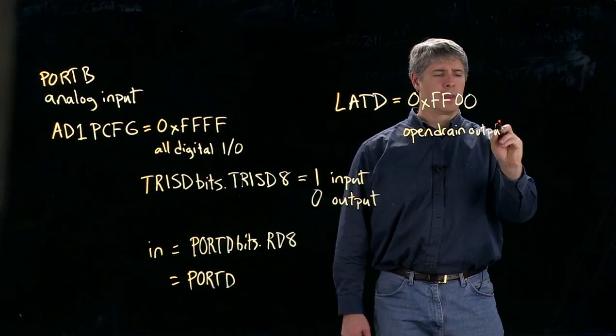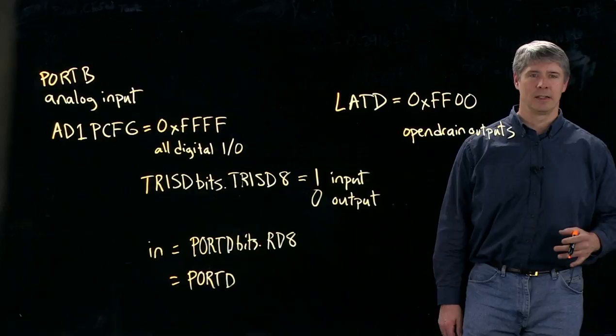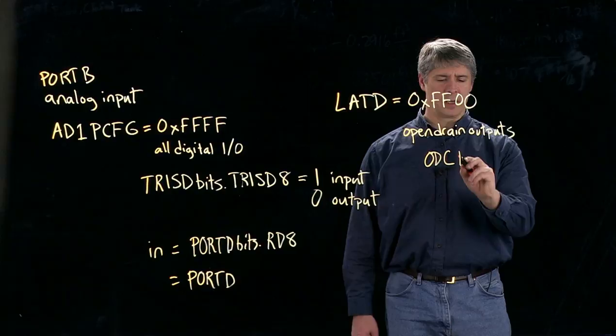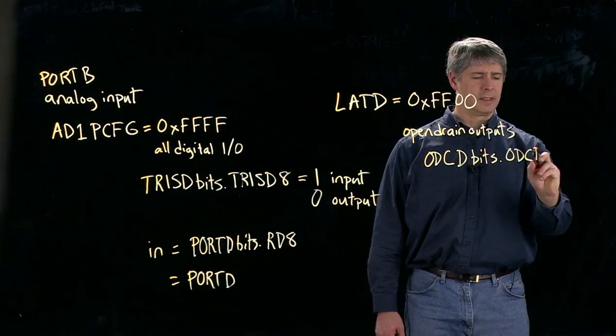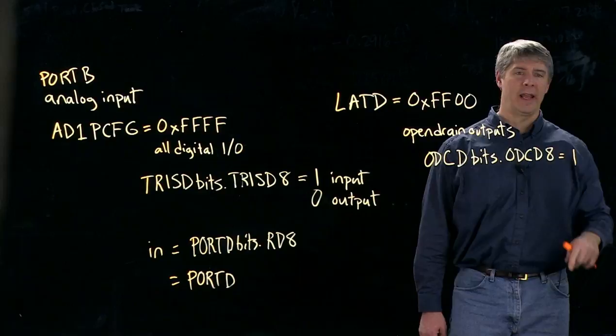And the way we do that, if we want to configure, say, pin 8 of port D as open drain, we would say ODC PORTD bits dot ODCD8 is equal to 1. And this makes now pin 8 an open drain output.